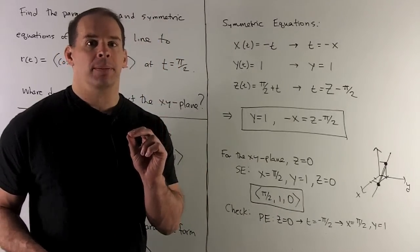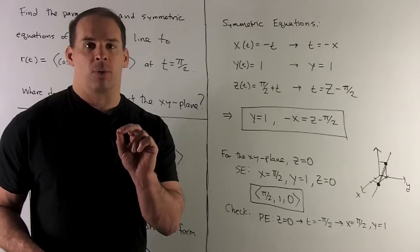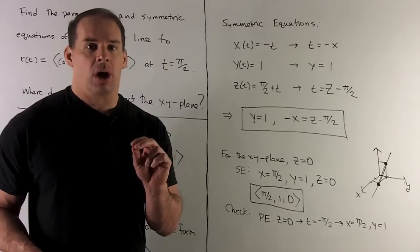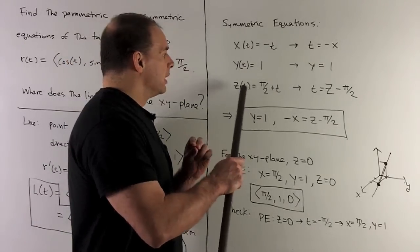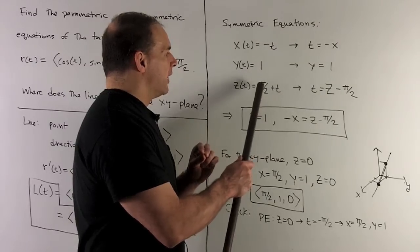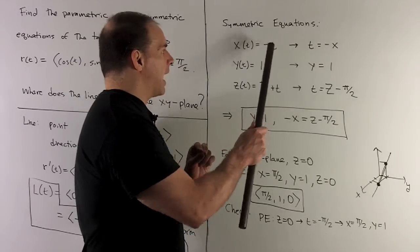Now we can check that. We can see what happens if we go to parametric form. So here, we're going to let the z value equal 0. If z = 0, we have t = -π/2, and then I can put that -π/2 in for the equation for x. So that'll give me π/2.